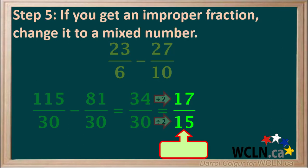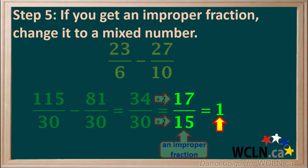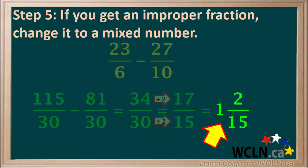Step 5 states that if we end up with an improper fraction, we must change it to a mixed number. We see that 17 over 15 is an improper fraction, so we need to convert it. 15 goes into 17 one time, and the remainder is 2 fifteenths. So our final answer is 1 and 2 fifteenths.